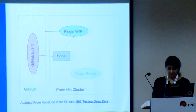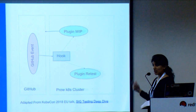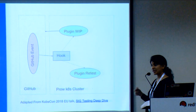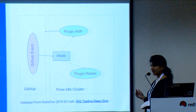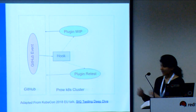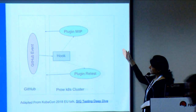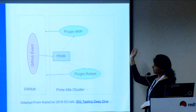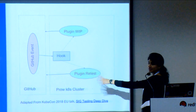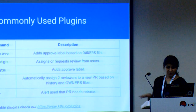That plugin attaches a label to filter out those PRs. There is another plugin for retest — if you want to retest or run all the unit tests or integration end-to-end tests. Once the request is processed by the plugin, the result is sent back to GitHub and the actions are performed.